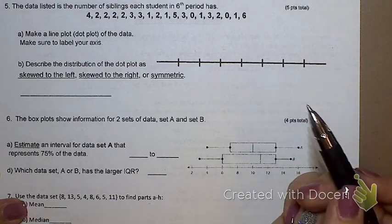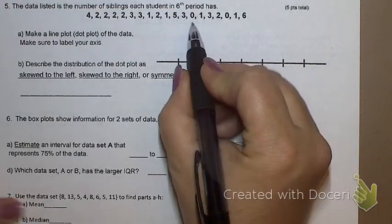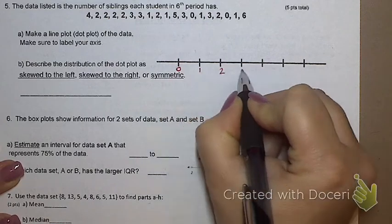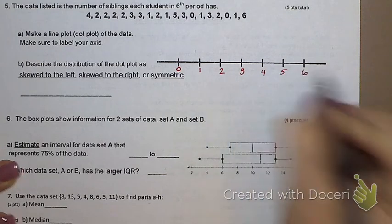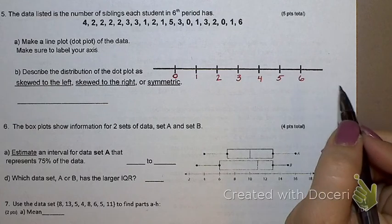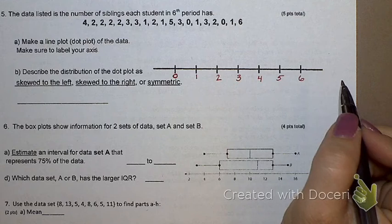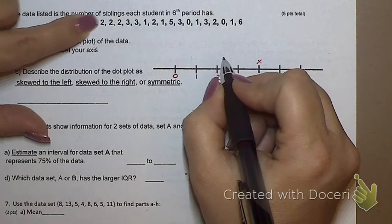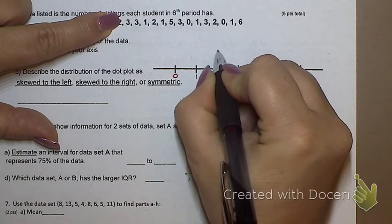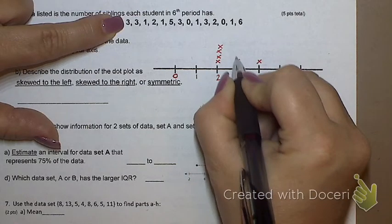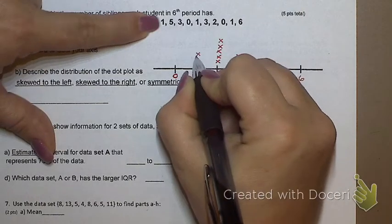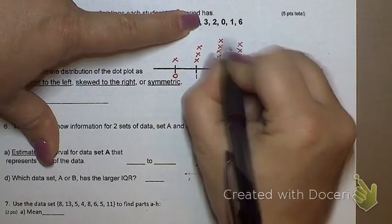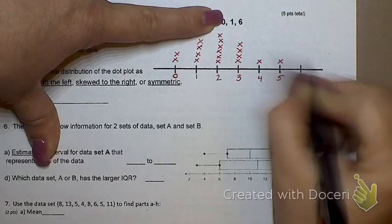I'm going to look here by saying, what's the smallest number on my list? Zero, because you can't have a negative number of siblings. I'm going to call it zero, one, two, three, four, five, six. And you can just keep going if you want to. Some of you did dots and some of you did X's. That's totally fine. I don't care which one you choose to do. So let's see. Here's four, two, two, two, two, two. That's four twos. One, two, three, four, three, three, one, two, one, five, three, zero, one, three, two, zero, one, six.